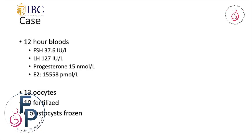12 hours later, we did the blood test, which showed FSH of 37.6, LH of 127, progesterone of 15 nanomoles per litre, and estrogen crossing 15,000. As I've always said, look at two important parameters for your trigger: the FSH and LH rise, and also keep an eye on your progesterone rise — it tells a very different story at times. 13 oocytes were obtained, 10 were fertilized, and 6 blastocysts were frozen.